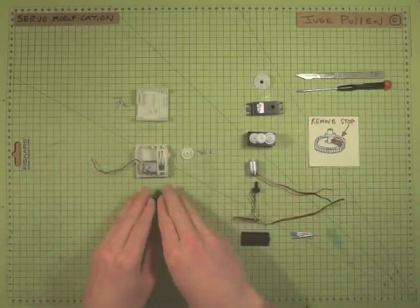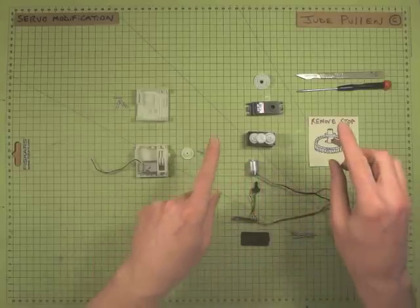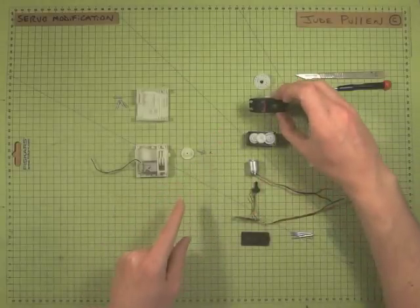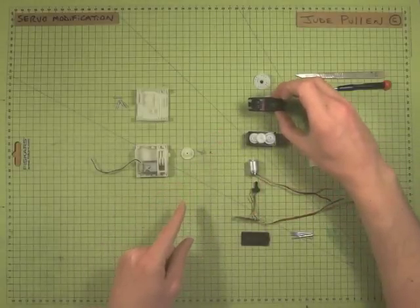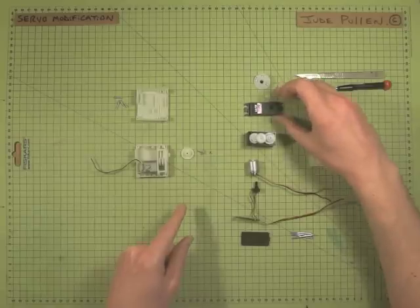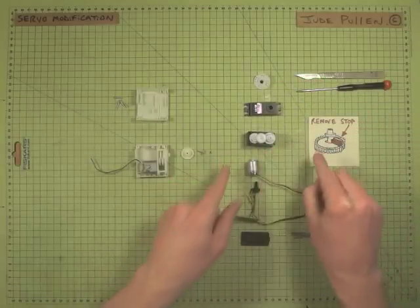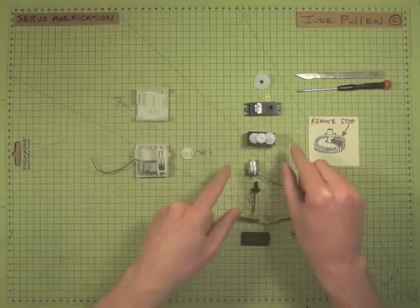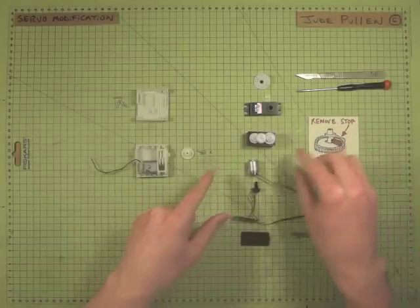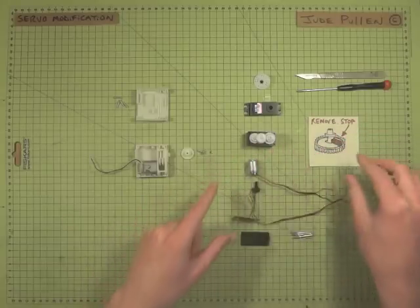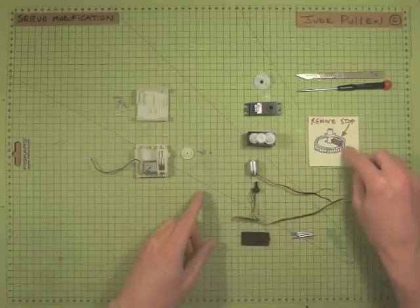And again, if we look at this, for example, is a high-tech HS311 servo. And again, you'll find that this gear here will come out. And if you remove all of these gears carefully, putting them on a sort of clean surface and keeping all the lubricant intact.